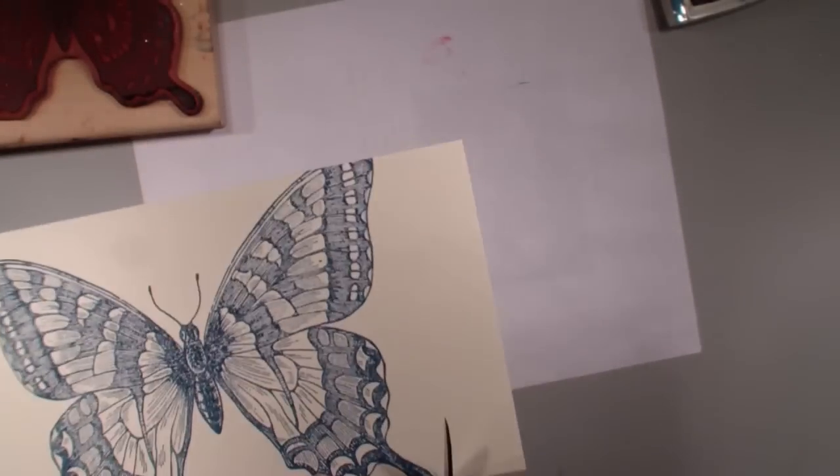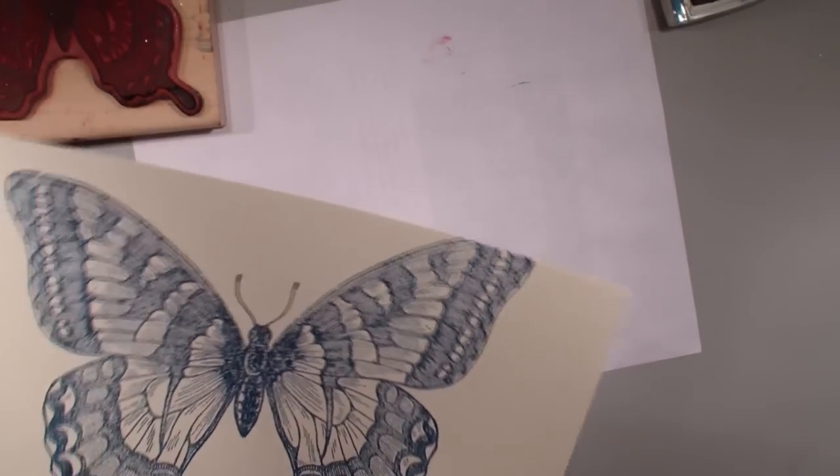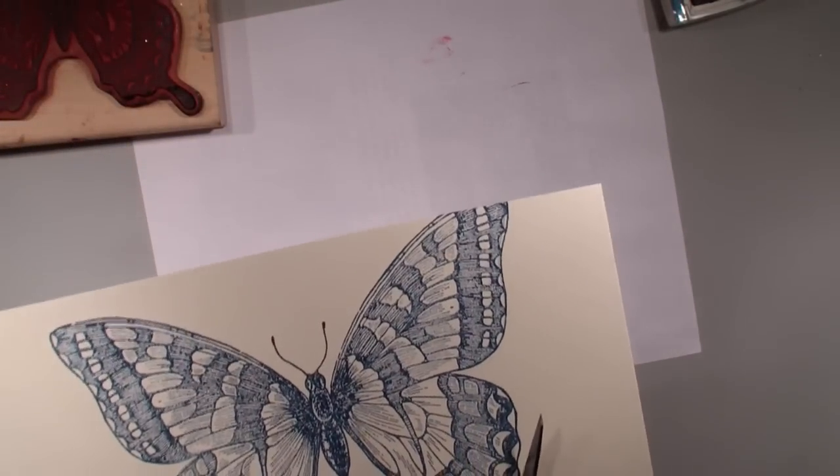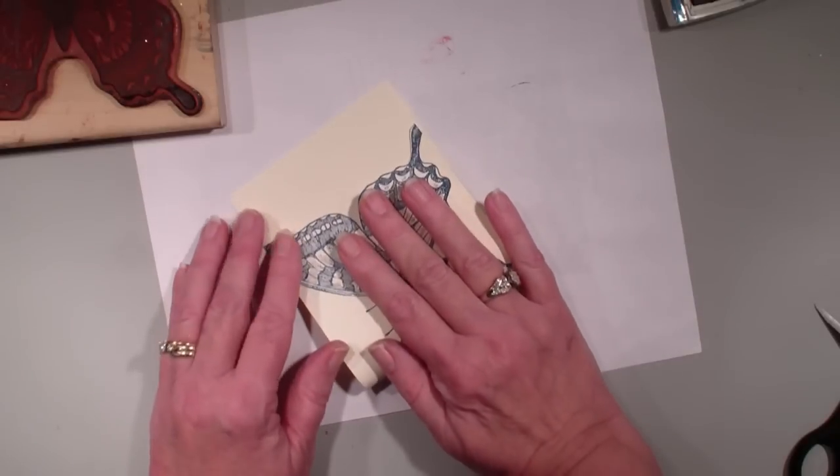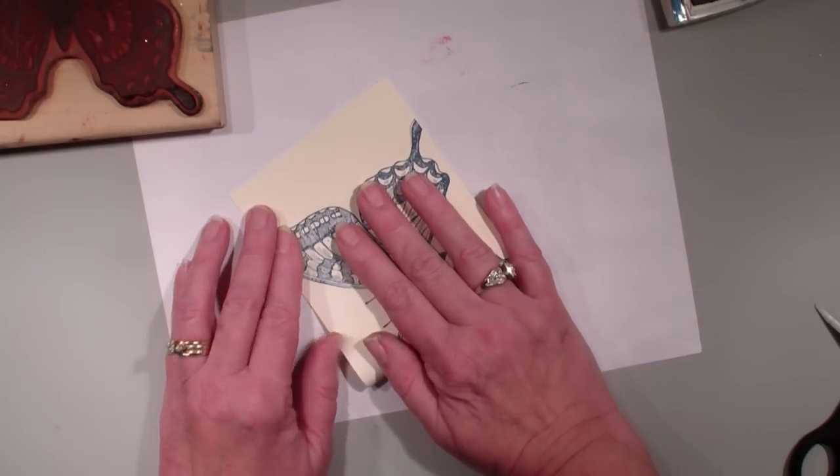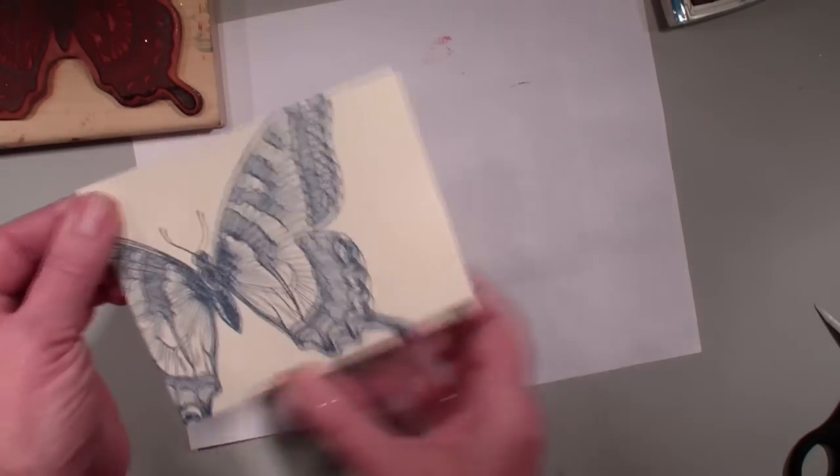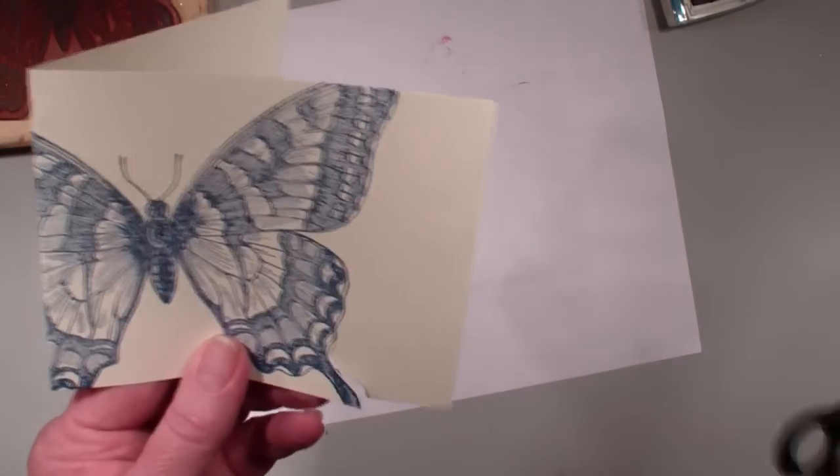snips and I'm just going to trim around that butterfly. And before I completely trim around it, I want to take that card and score it because I want to know where the edge of my card should be. So